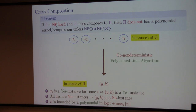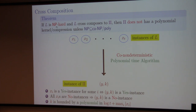We can also use, instead of a polynomial time algorithm, a co-nondeterministic polynomial time algorithm — a nondeterministic algorithm that can make nondeterministic guesses. When it is co-nondeterministic, the property we want is: if at least one instance is a yes instance, then in all computation paths of the nondeterministic algorithm, the output (y, k) should be a yes instance. And if all of them are no instances, then in at least one computation path, (y, k) should be a no instance.